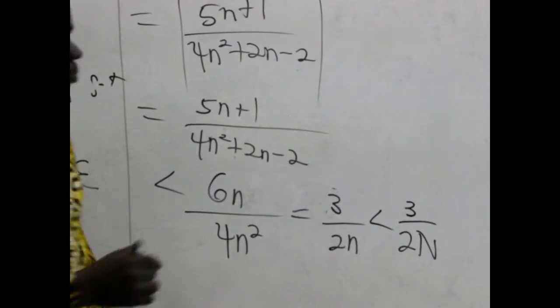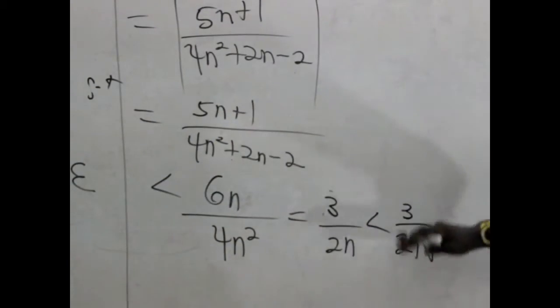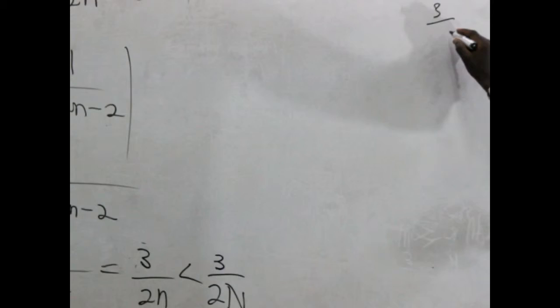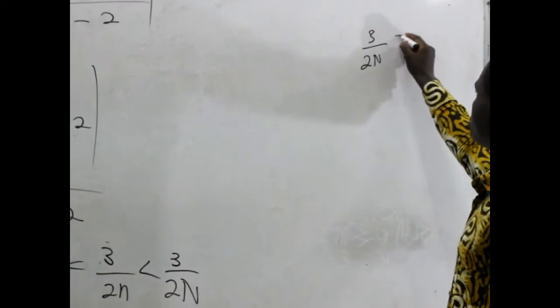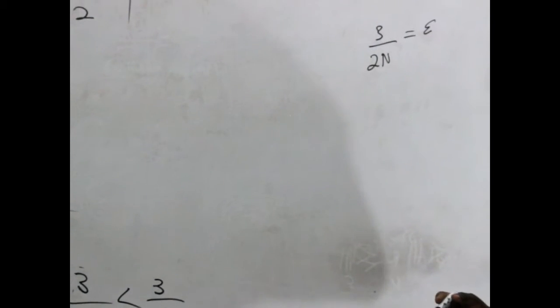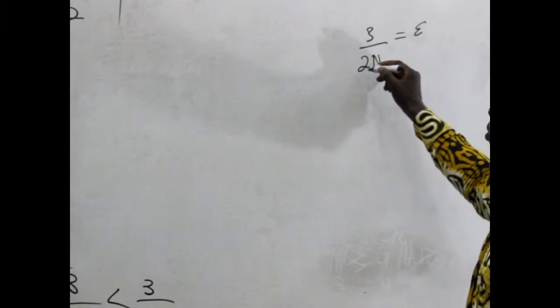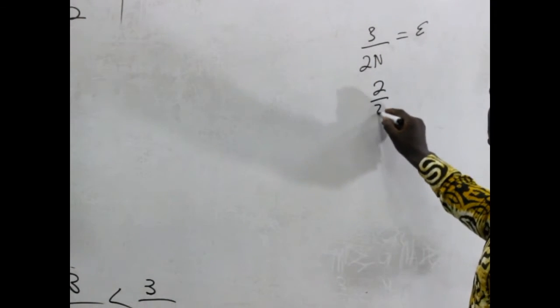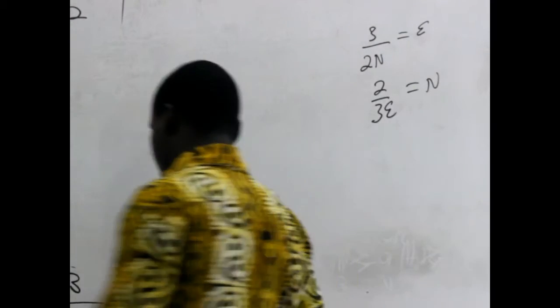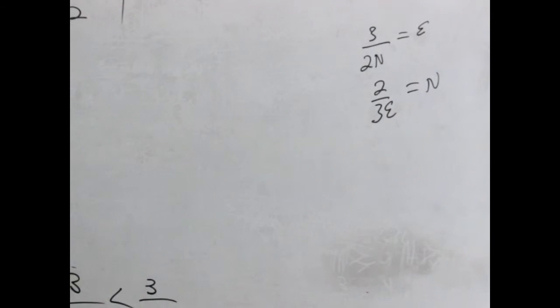Introducing the big N would mean that this would be less than 3 divided by 2n. Now to introduce the epsilon, we just equate everything here to epsilon. We hide somewhere and say 3 divided by 2n should be equal to epsilon. Quickly, we make big n the subject. We realize that we need to have something like 3 over 2 epsilon to be equal to n.